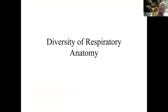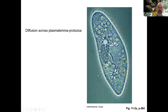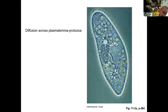Now we're going to look at the evolution and differences between respiratory structures in different animals, going from the very simple to the very complex. Here's an example of a protist — a small protozoan — that depends basically on oxygen just diffusing across the plasma membrane. Oxygen simply goes across, CO2 goes out. You don't need lungs or gills because it's a very small organism and the distance oxygen has to travel is very, very short.